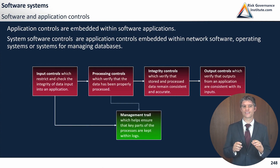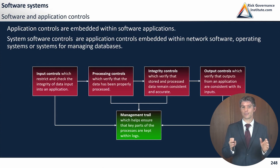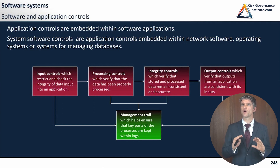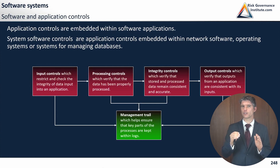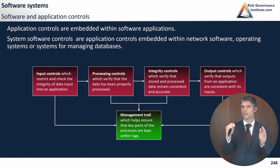To tie all of these parts together, there is a final control: ensuring there is a management trail — also known as an audit trail. It helps ensure that key parts of the process are kept within logs, that there is a trail for transactions, and that if there's any change to the system, you know exactly what changed and when. This works especially for transactional events like communications coming in and out, or accounting and operations activities.